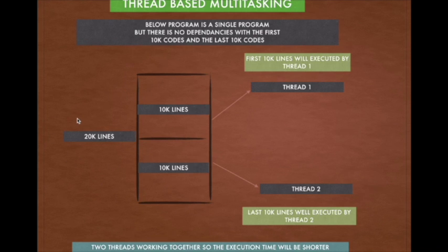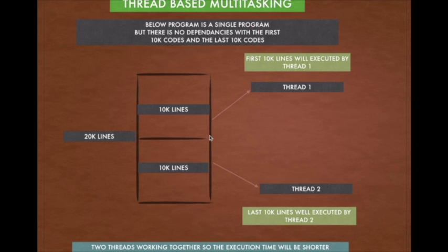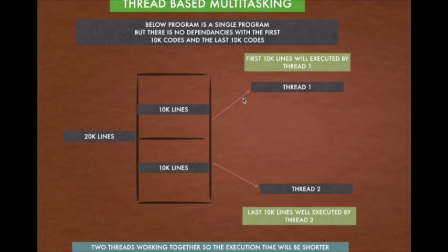Whenever I run this application it is taking around one hour to run. I observe that the first 10,000 lines of code have no relation with the last 10,000 lines of code. So I can execute this code separately and this code separately, and if I do that then the whole bunch of code is going to be executed in a shorter time.